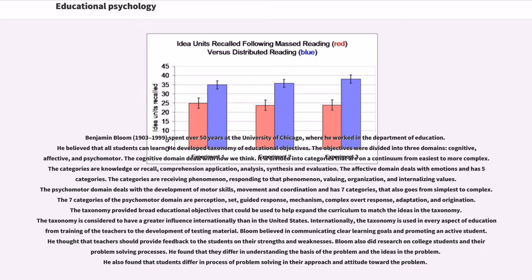Benjamin Bloom (1903–1999) spent over 50 years at the University of Chicago in the Department of Education. He believed that all students can learn and developed a taxonomy of educational objectives divided into three domains: cognitive, affective, and psychomotor. The cognitive domain deals with how we think, ranging from easiest to most complex: knowledge/recall, comprehension, application, analysis, synthesis, and evaluation. The affective domain deals with emotions and has five categories: receiving, responding, valuing, organization, and internalizing values.